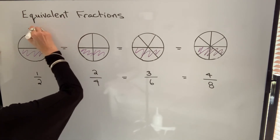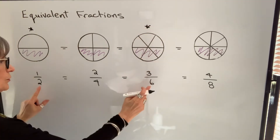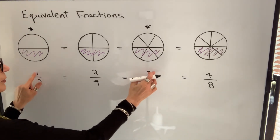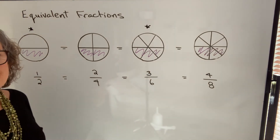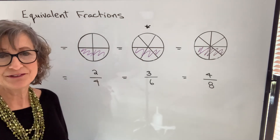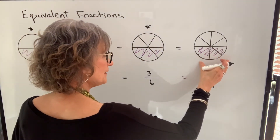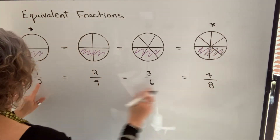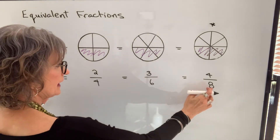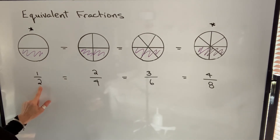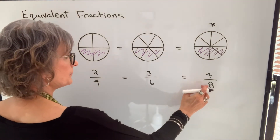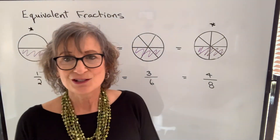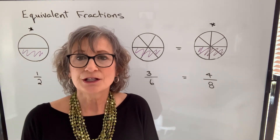Similarly, if we take a look at this pie and this pie, notice that we have three times the number of pieces that the pie is split into, and the person ate three times as many pieces — they're just smaller pieces, but the amount of pie eaten is the same. And looking at this next example, the denominator eight is four times greater than two. Two times four equals eight, and the numerator will be four times as big as well. So you can find an equivalent fraction by doing this.